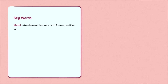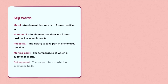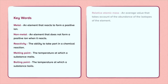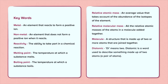Keywords — Metal: an element that reacts to form a positive ion. Nonmetal: an element that does not form a positive ion when it reacts. Reactivity: the ability to take part in a chemical reaction. Melting point: the temperature at which a substance melts. Boiling point: the temperature at which a substance boils. Relative atomic mass: an average value that takes account of the abundance of the isotopes of the element. Relative molecular mass: all the relative atomic masses of the atoms in a molecule added together. Molecule: a structure made up of two or more atoms joined together. Diatomic: a word used to describe something made up of two atoms — a pair of atoms. Aqueous: dissolved in water. Displace: to take over the position of something.